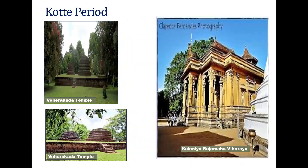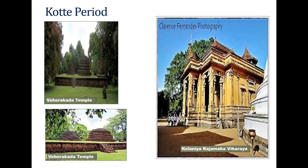Then came the Kotte period. From the central province, we came down — Kotte is very close to Colombo. This is where the second-to-last king of Sri Lanka ruled. The Kelaniya Rajamaha Vihara is a very famous temple that everybody wants to visit. The Verakanda temple and other interesting buildings are preserved from this period.